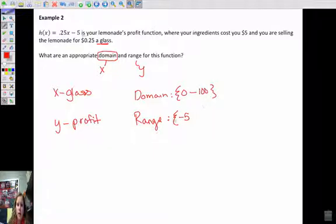So let's say we can sell 100, 100 glasses. Then our range would be, if we sell 100, then a fourth of that would be 25 minus 5. Then our profit, we can get up to $20 of profit. So our domain would be zero to 100. Our range then would be negative 5 to 20 for profit.